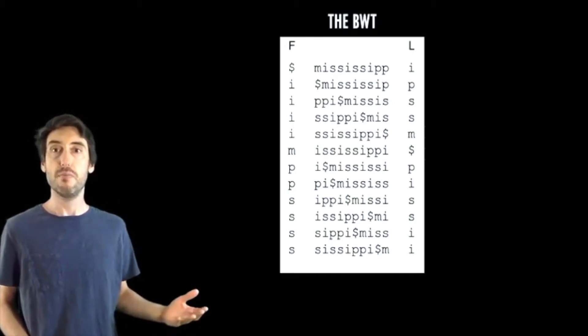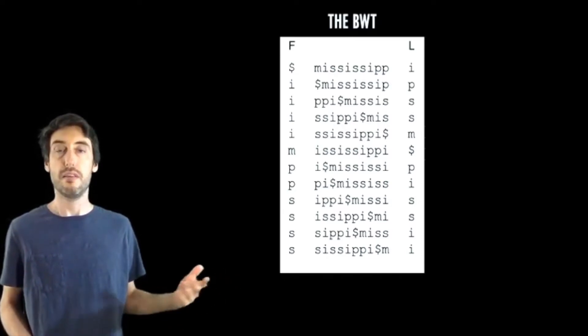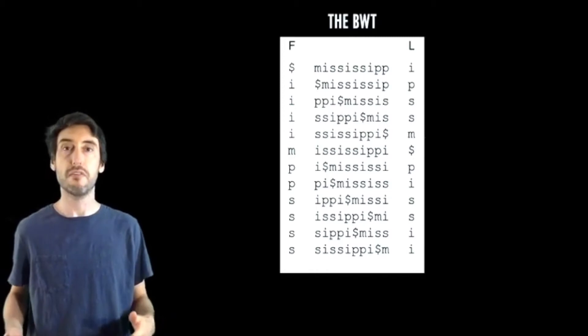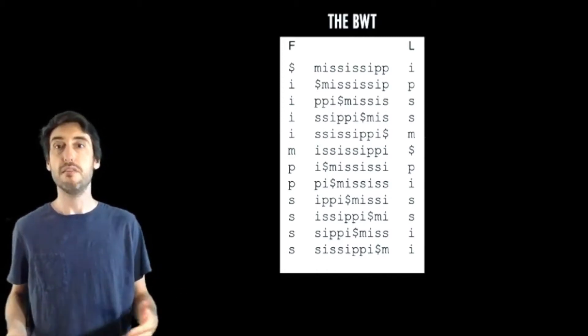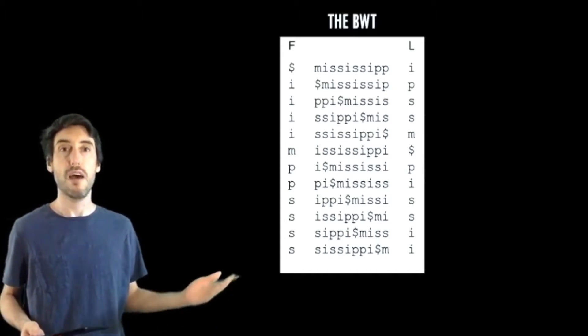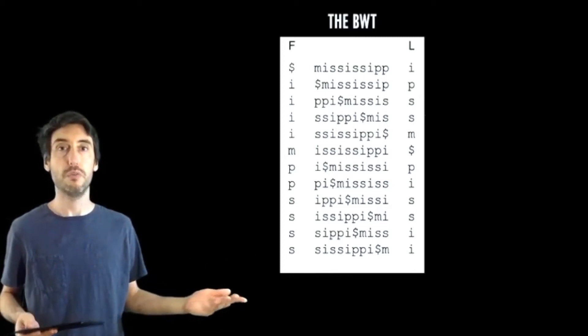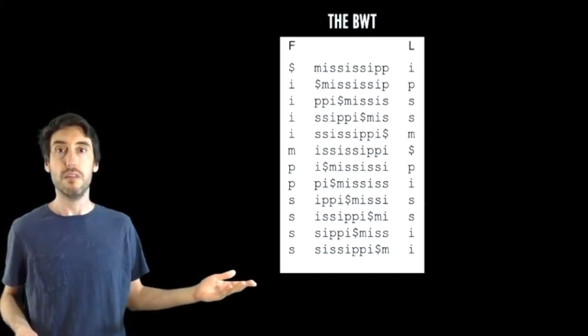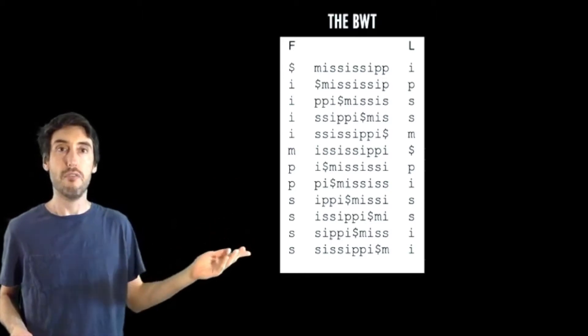On this slide we see a matrix of all the cyclic shifts of the string Mississippi dollar sign. Now the character dollar sign is something we append to the string that's lexicographically smaller than any other character in the string, and this is done to make the transformation invertible. Now let's look more closely at this matrix. I put some space between the first and last column, which we're going to label F and L. So the F column contains all the characters in the string, they're ordering in alphabetic order.